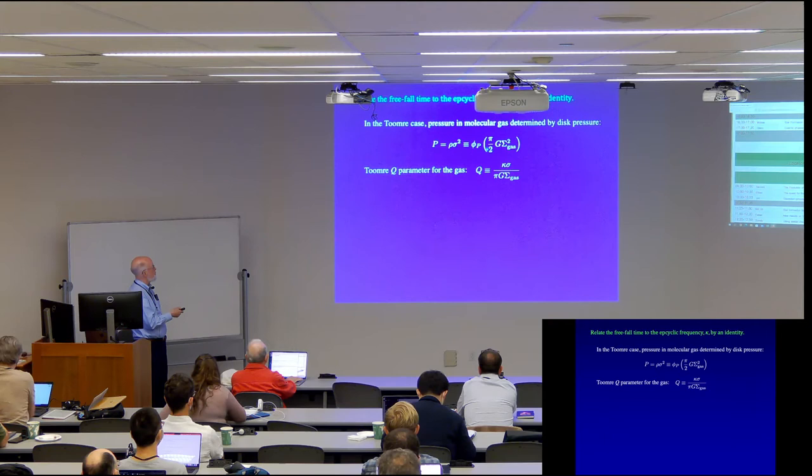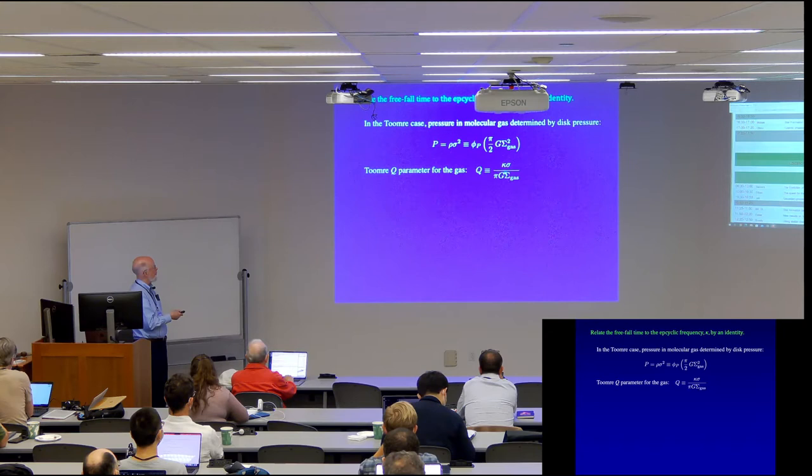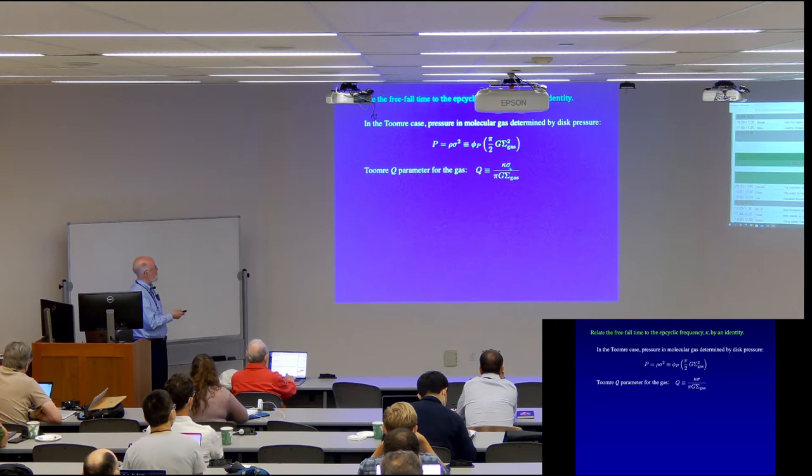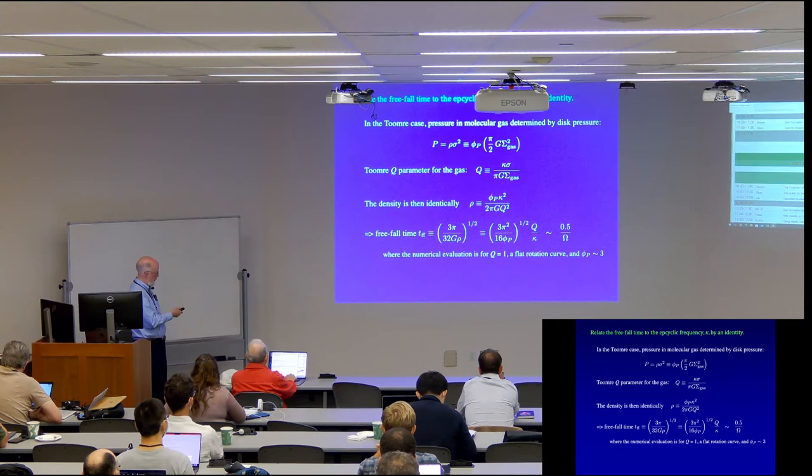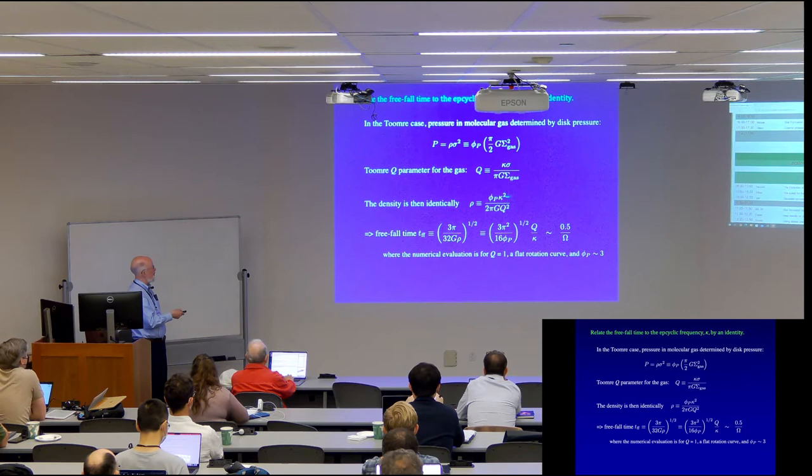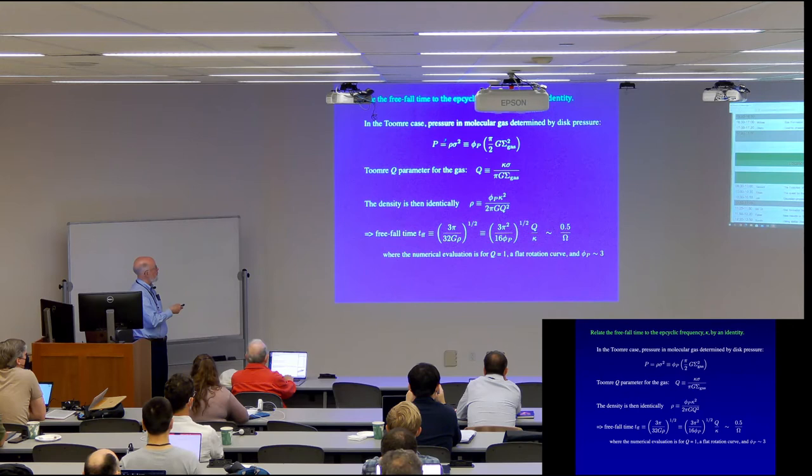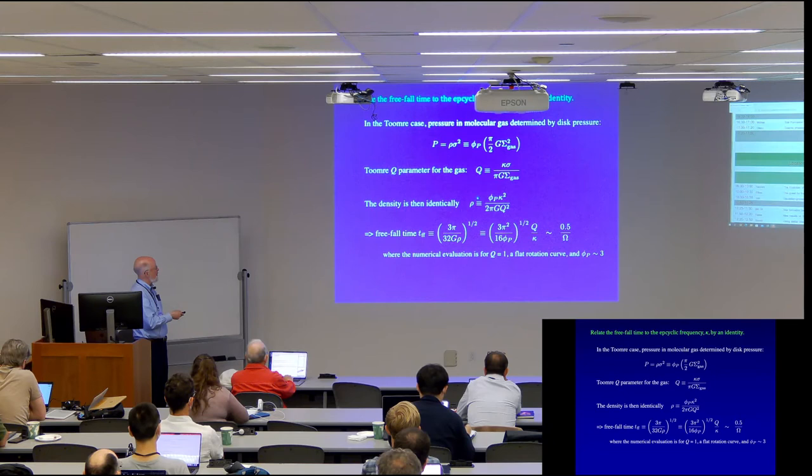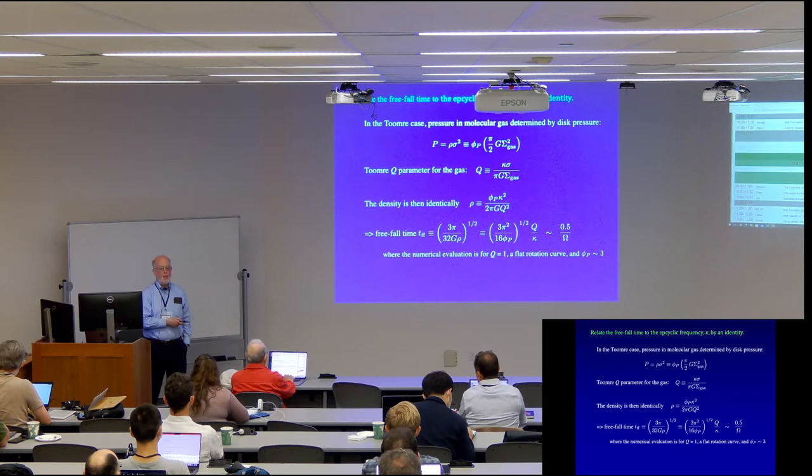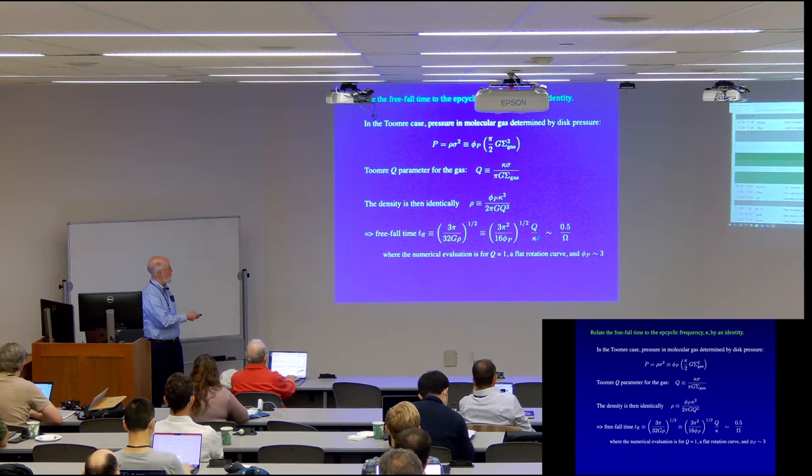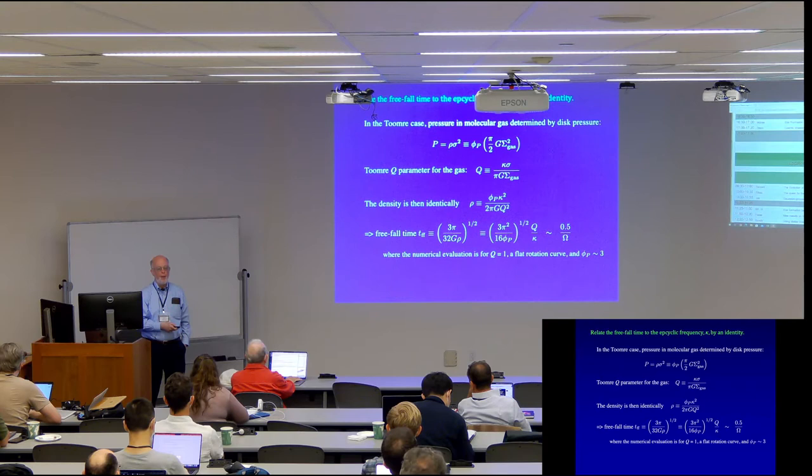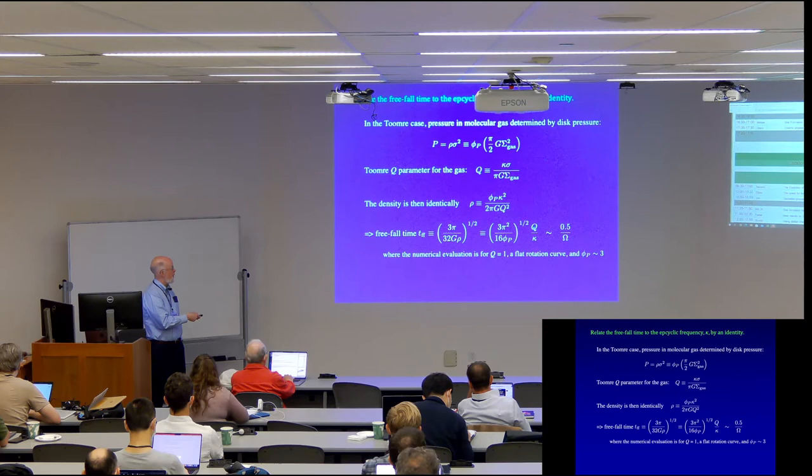Then we have the definition of the Toomre parameter, Q, for a gas. And I want you to notice right away that we have a sigma over proportional sigma gas. And here we have sigma over sigma gas. So what you can do is very straightforwardly show that the density is just given by the, just proportional to the square of the epicyclic frequency divided by the square of the Toomre Q parameter. Now I want to call your attention to the fact that most of these cases here, I have identity signs and not equal signs. And that's quite deliberate. What I'm emphasizing is that this equation here where I relate the freefall time to the Toomre Q parameter and the epicyclic frequency is entirely a matter of definition. There's no physics in it whatsoever.